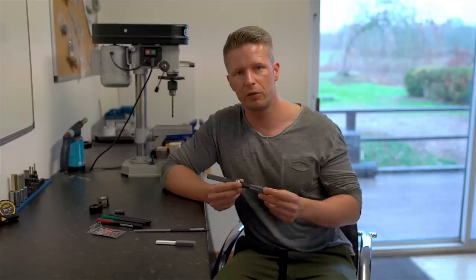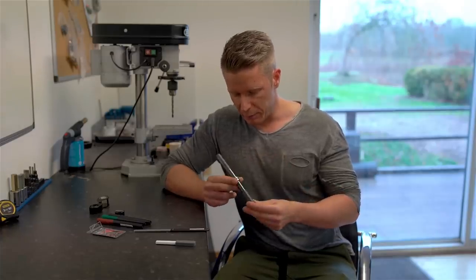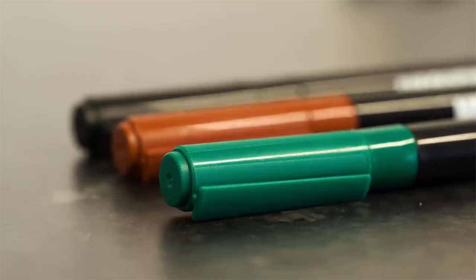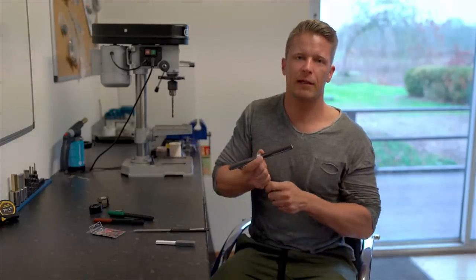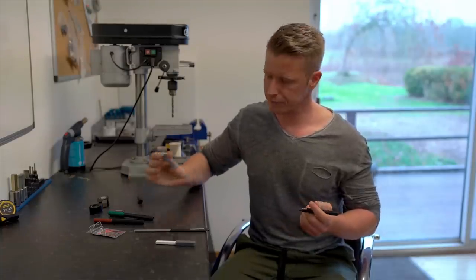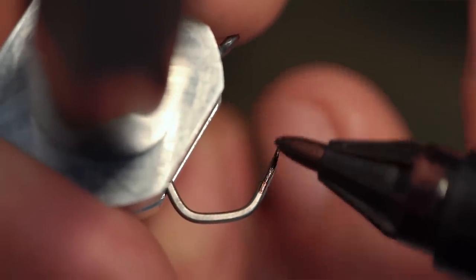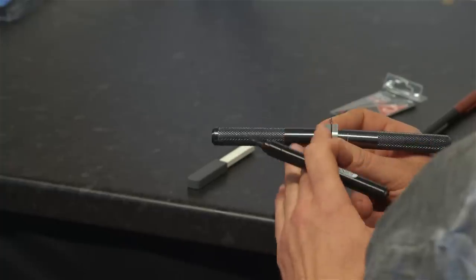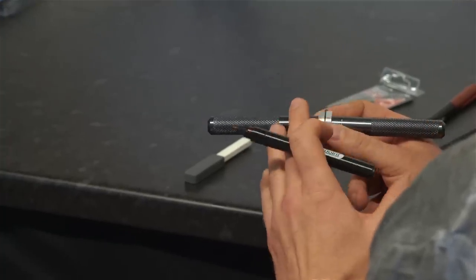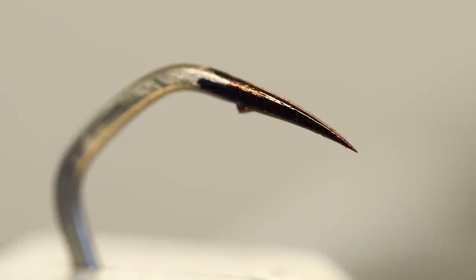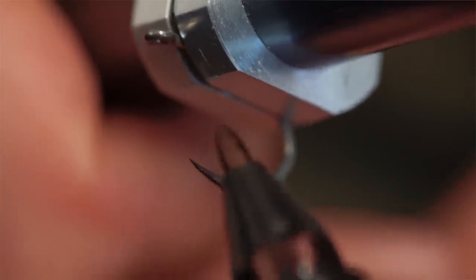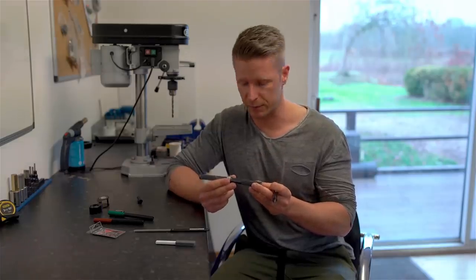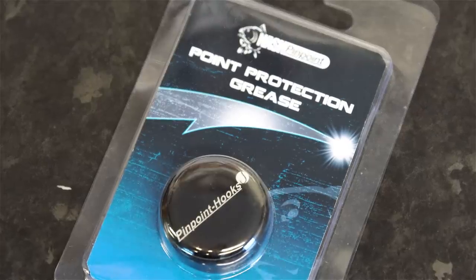So now that this hook is pretty much perfect, there are a couple of things you can do to keep it that way and basically prevent corrosion. First thing are these markers. We basically have three different colors to match the lake bed. What these will do is they will create a barrier between the naked steel and the water. If you're coloring your hook point like this you will find two results: A, it's protected, and B, the ink of these markers takes away the shine of the hook point which might play a role in your fishing, which is something that you have to decide for yourself, but it's a nice side effect of protecting your hook points in the first place.